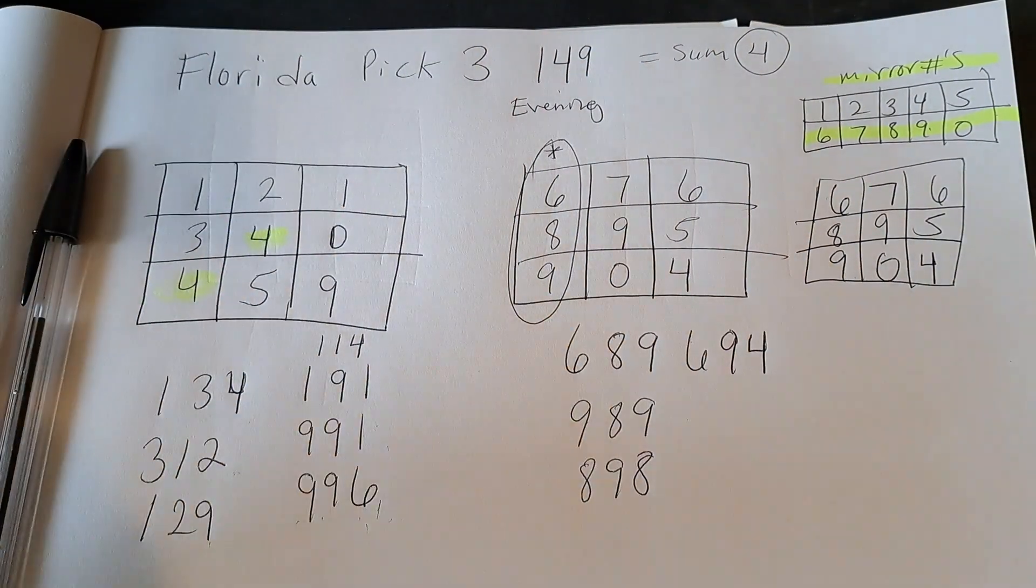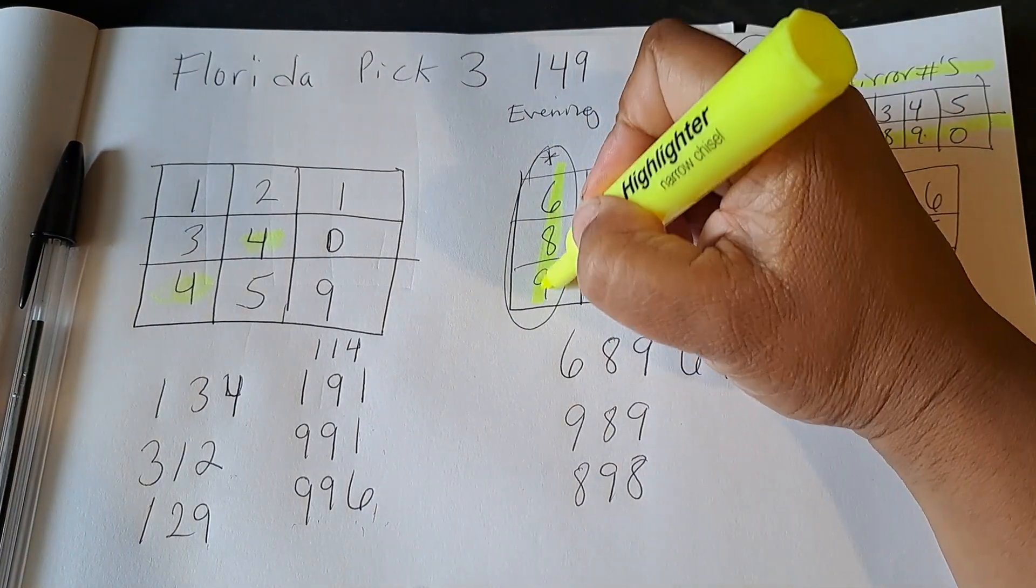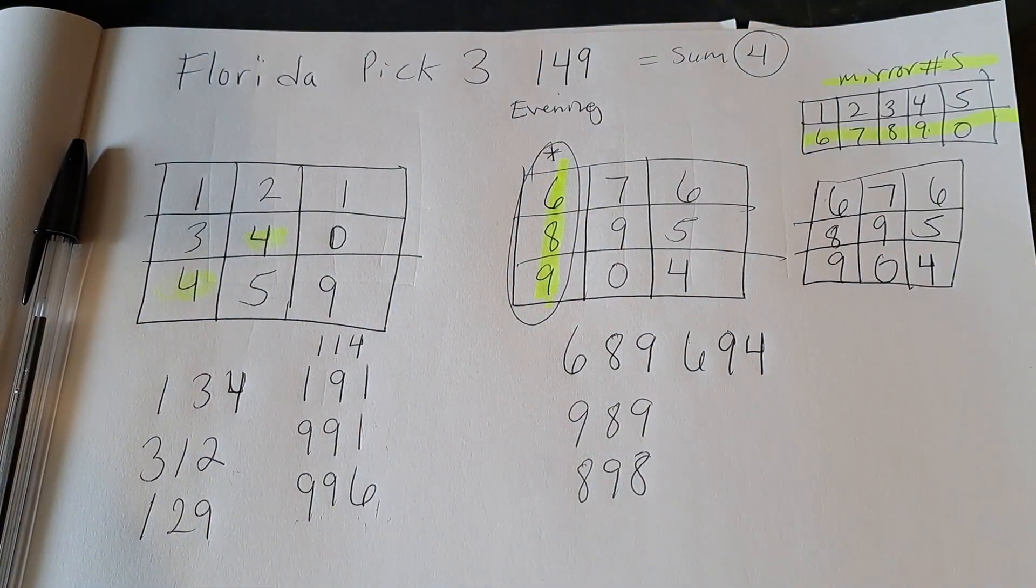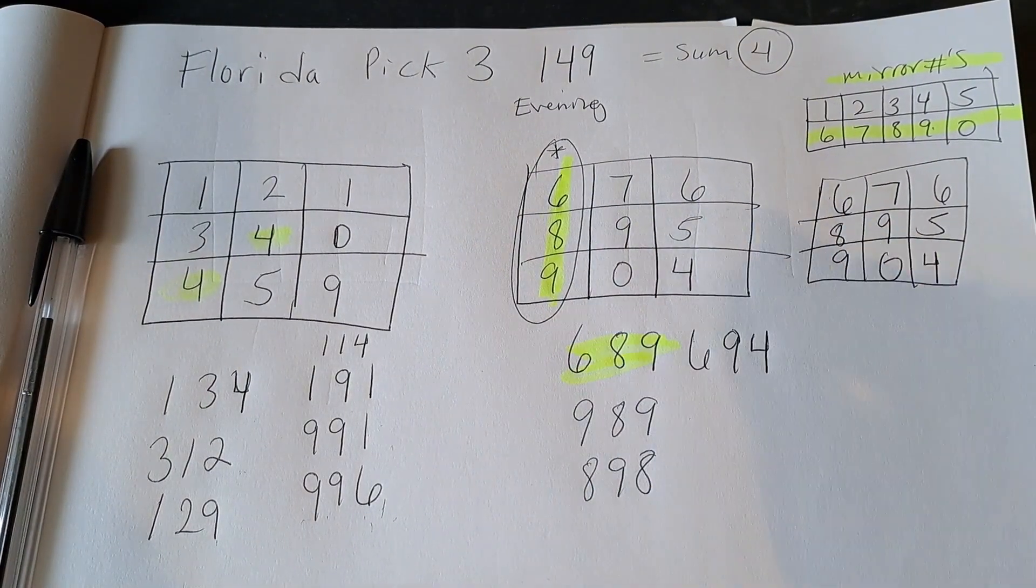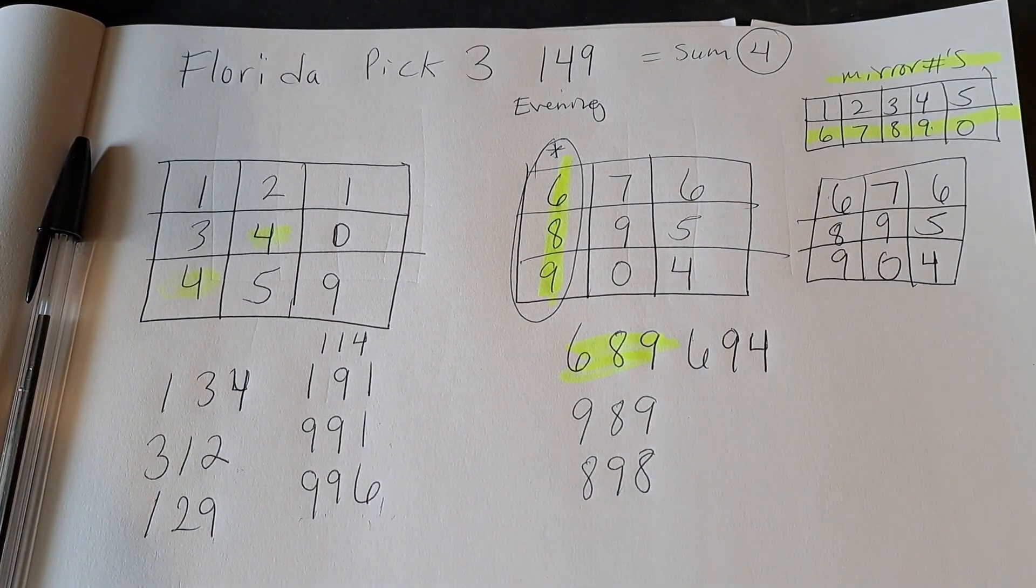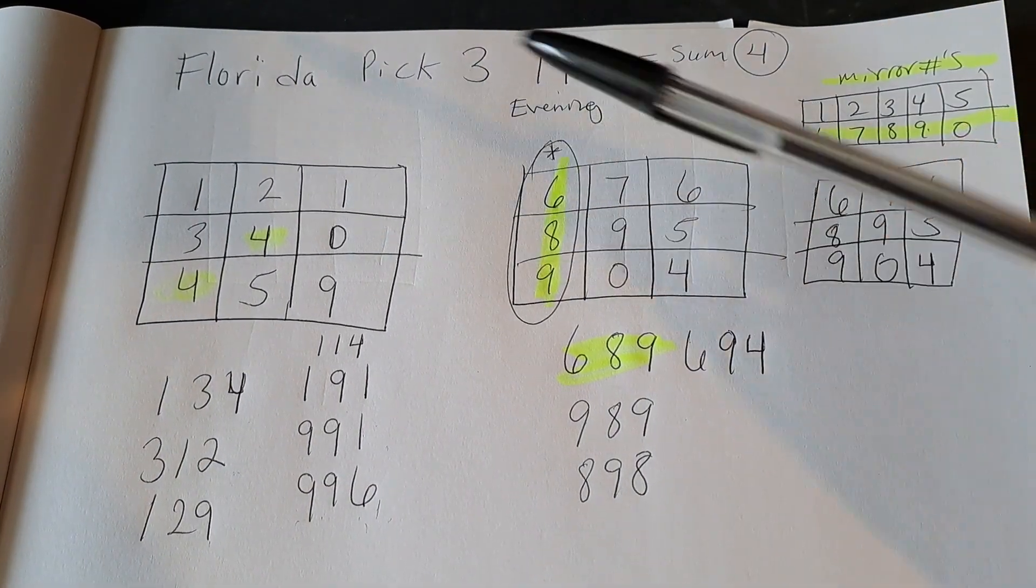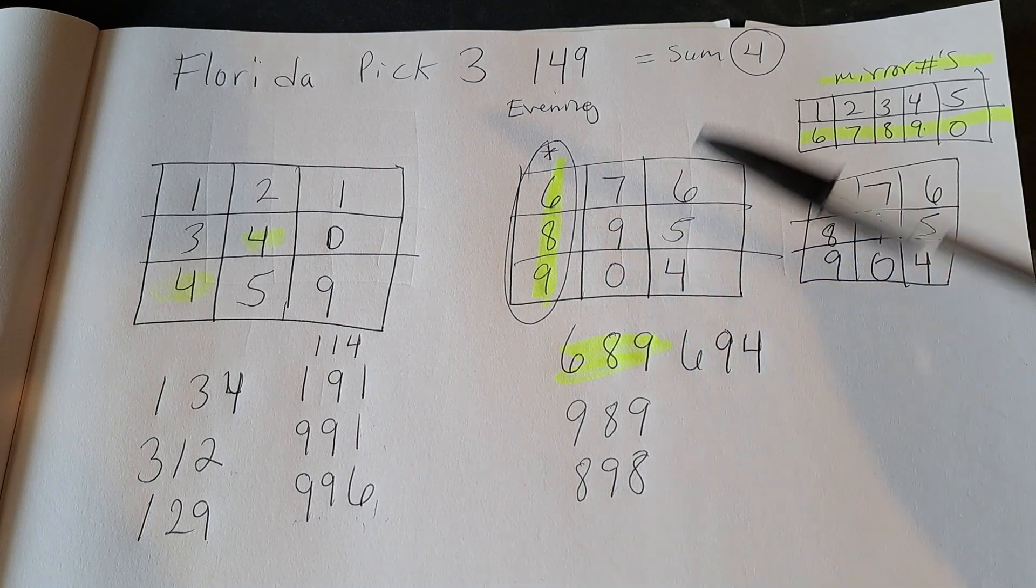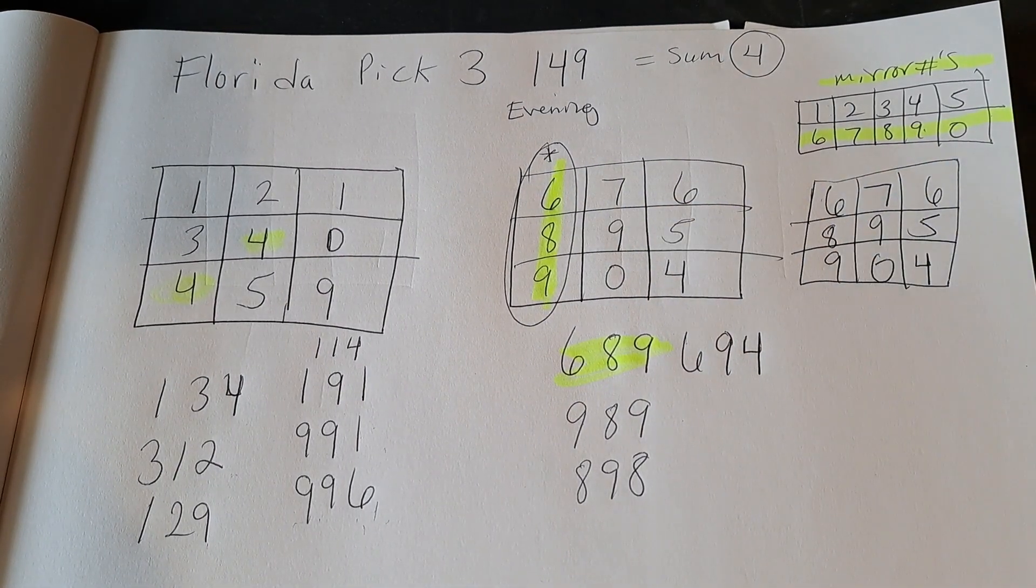So the following draw for the midday draw Florida had 6, 8, 9 straight. 6, 8, 9 came out straight. And it was right there on the tic-tac-toe on the mirror number. This is why I always do the regular tic-tac-toe with the number that came out and also the mirror numbers. So it's right here 6, 8, 9.